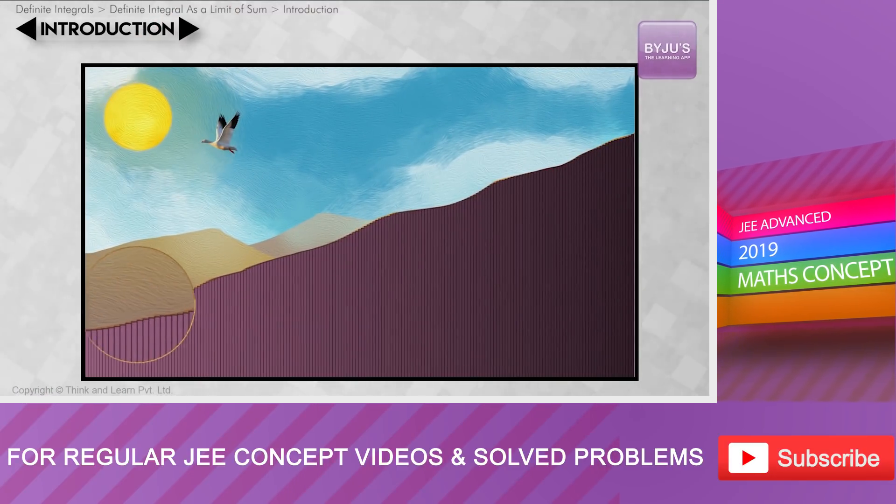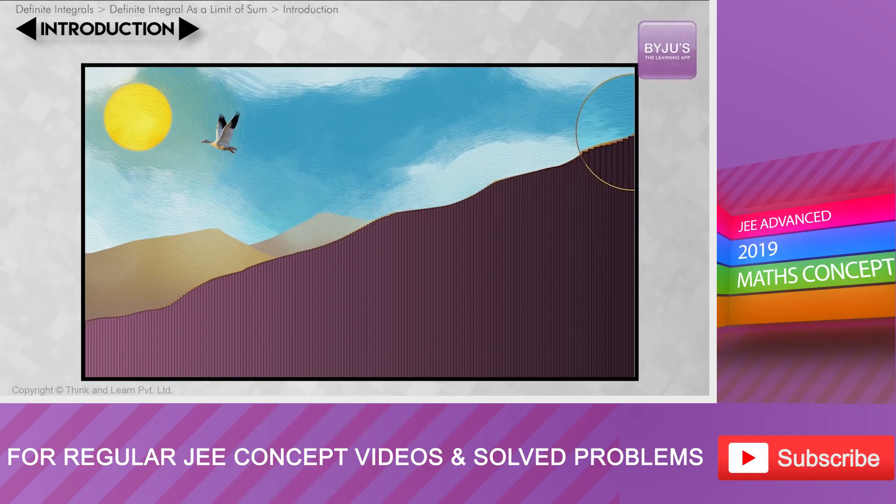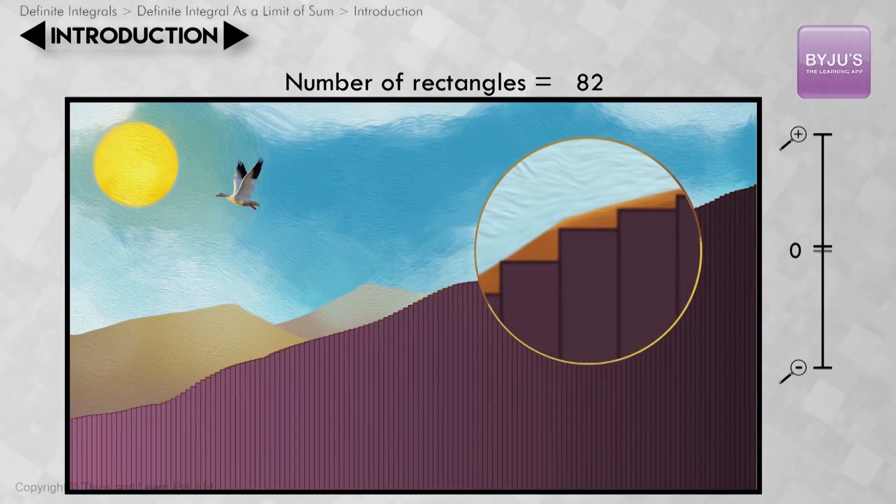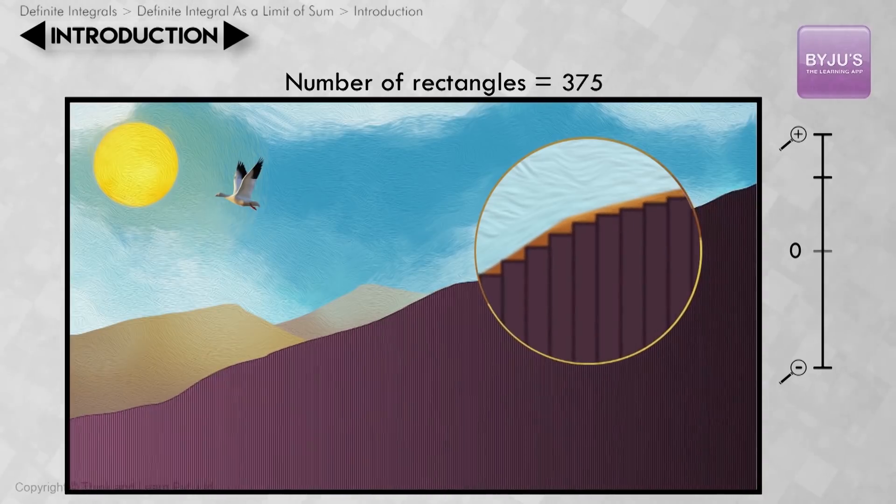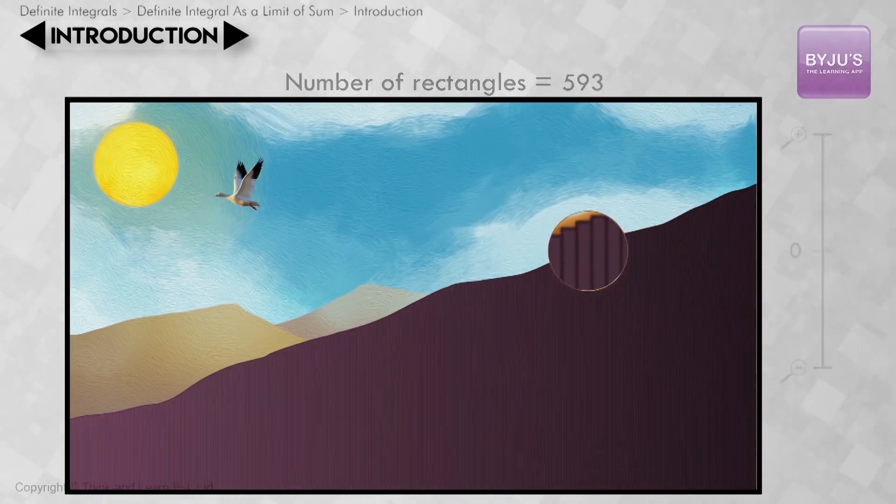You can see under such condition the leftover area tends to zero. This kind of helps us or gives us an intuition to calculate the area, but how do we practically implement this using the mathematical knowledge we have? That is to calculate the sum of the area of these rectangles with infinitesimally small breadth. That's what we'll study in our next series of videos.